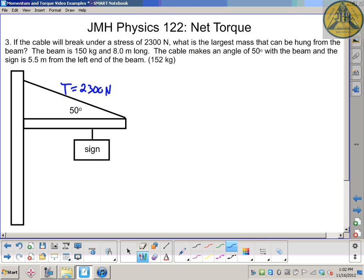We want to know the largest mass that we can hang from the beam. The beam is 150 kilograms, 8 meters long. The cable makes an angle of 50 degrees. Remember it's not very clear, that's where the 50 degrees is. And the sign is 5.5 meters from the left side.